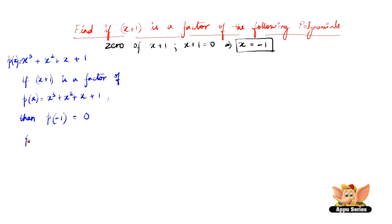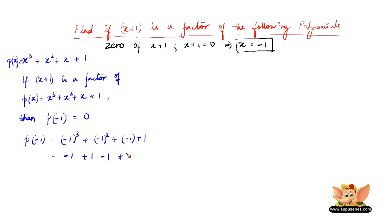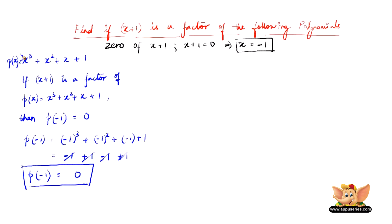So let us see if it is equal to 0. p of minus 1 equals minus 1 whole cube plus minus 1 whole square plus minus 1 plus 1. Minus 1 cubed is minus 1, plus minus 1 squared is plus 1, then minus 1, then plus 1. The negative and positive terms cancel and hence we get 0. Therefore p of minus 1 equals 0, which says that x plus 1 is a factor of x cubed plus x squared plus x plus 1.